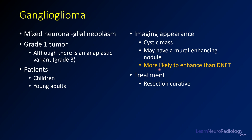Now if you see one of these lesions and it could be a DNAT, DNATs are less likely to enhance. So in a testing scenario: if you see enhancement, choose ganglioglioma; if you don't see enhancement, choose DNAT. Treatment for ganglioglioma is curative resection — if you take it out, it's not likely to come back.